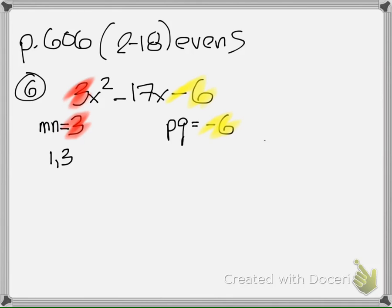And it's a positive 3 at that. For pq, there's 1 and negative 6. There's negative 1 and 6. There's 2 and negative 3, excuse me. And then there's negative 2 and positive 3.